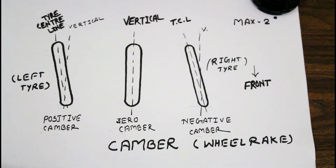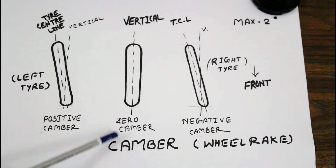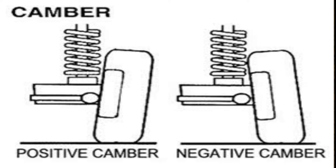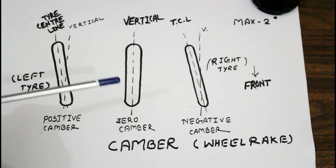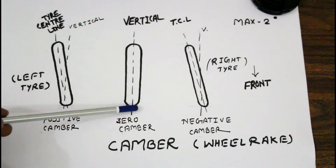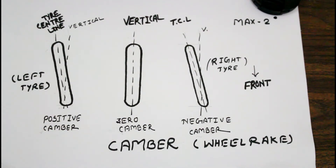Camber is the tilt of the car wheel relative to the vertical. There are basically three cases: zero camber, positive camber and negative camber. If the vertical line and the tyre centre line are parallel to each other, that is the case of zero camber. Zero camber is basically used for the rear wheels, while positive and negative cambers are used for the front wheels.